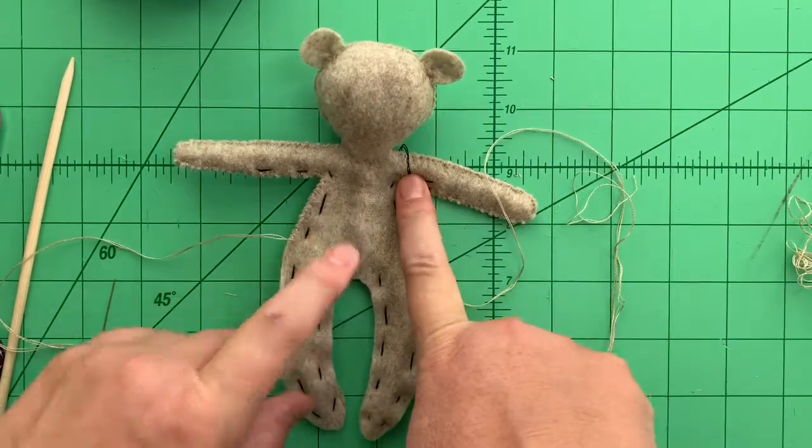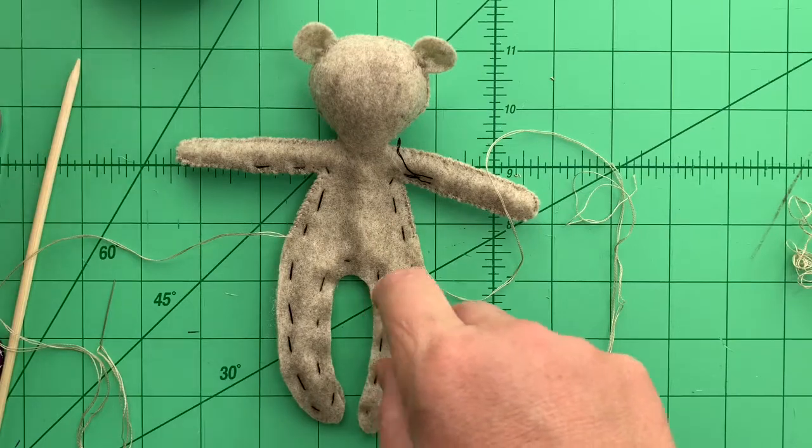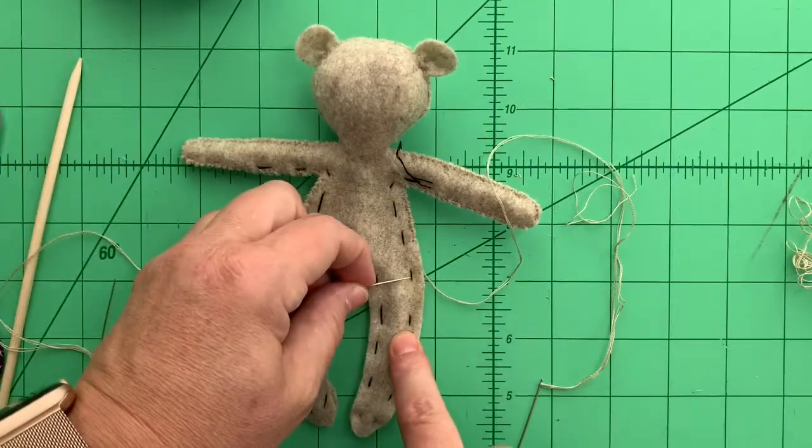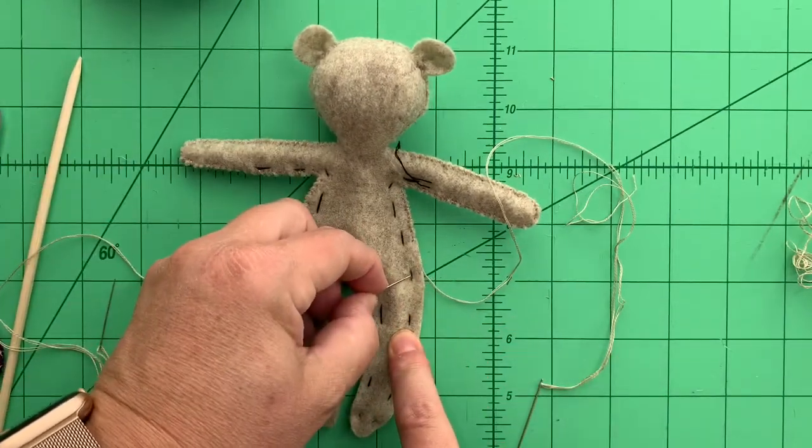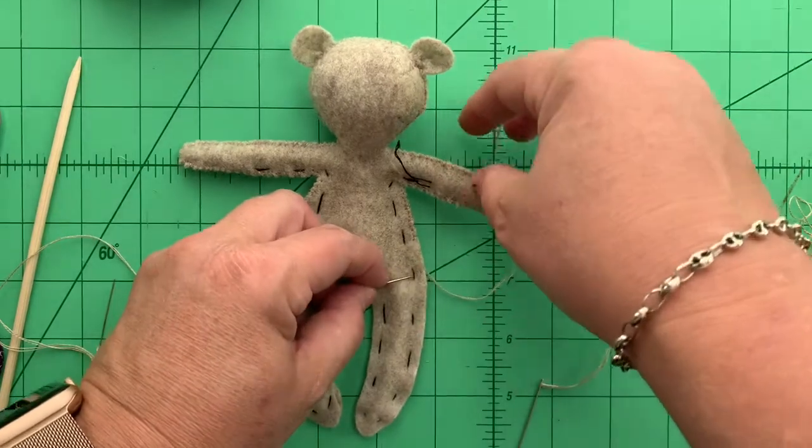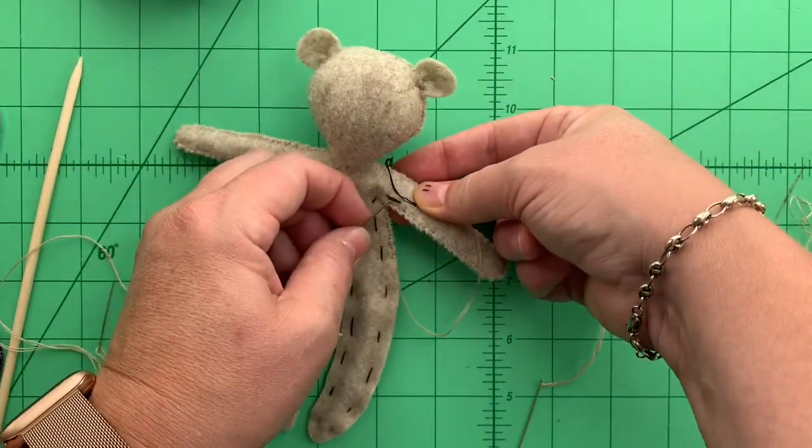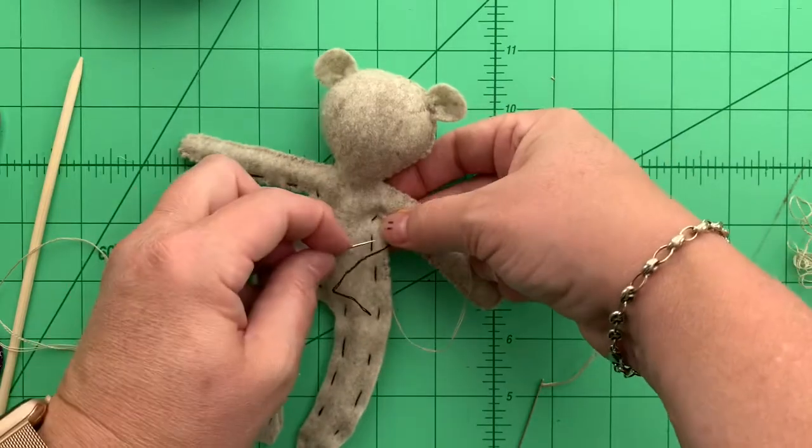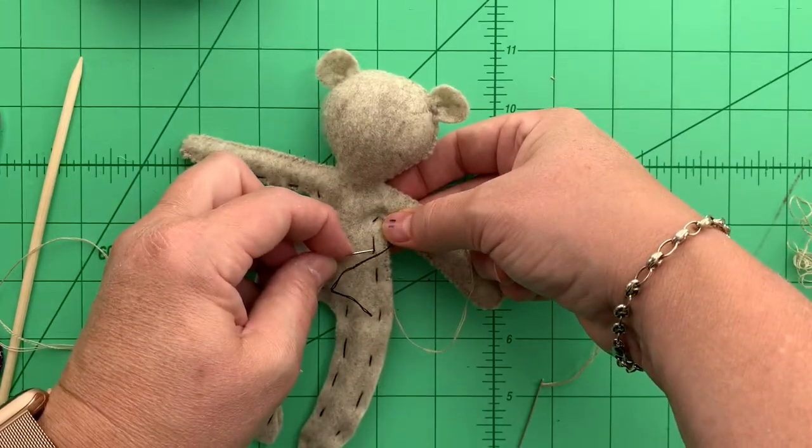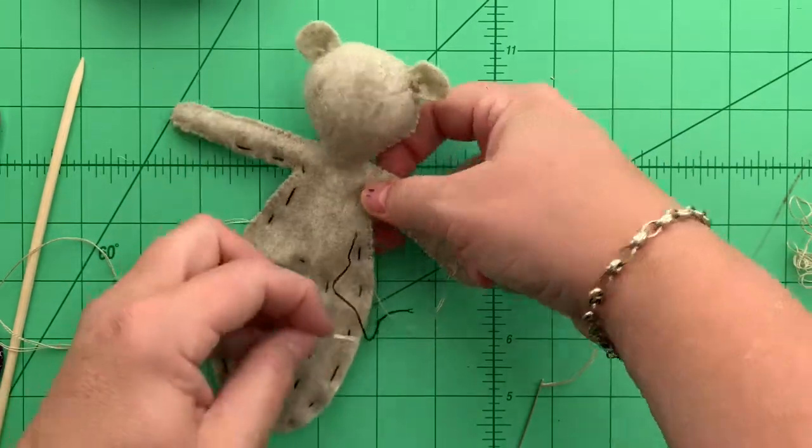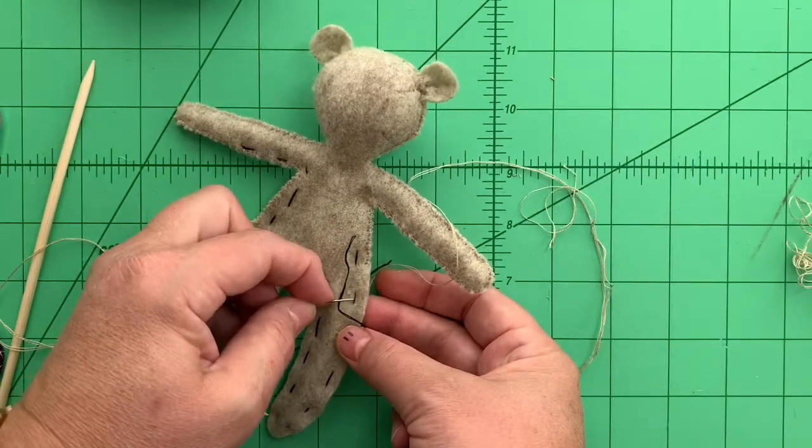Now what I'm going to do here is remove the basting partially to about just a baby, about an inch below where I stopped whip stitch. I'm going to partially fill this little guy.